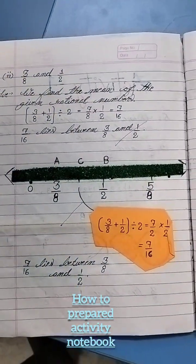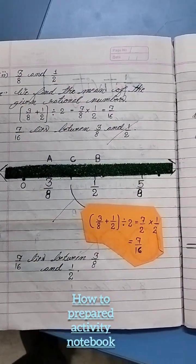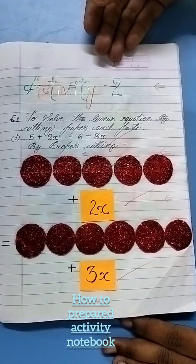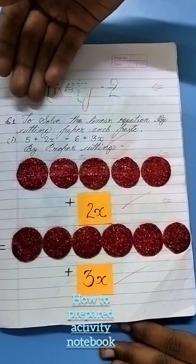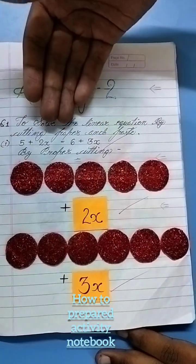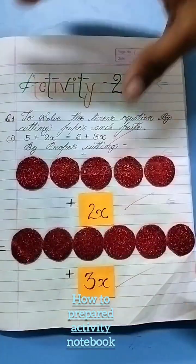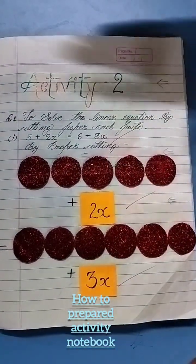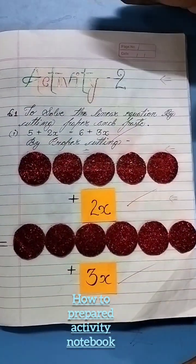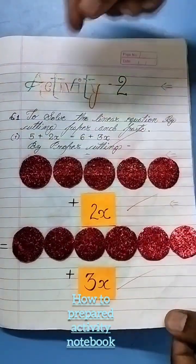The second activity is about solving the linear equation by cutting paper and pasting. By this activity, students can understand the chapter linear equation in one variable. These are some examples.